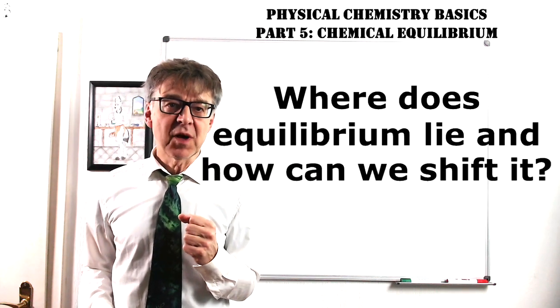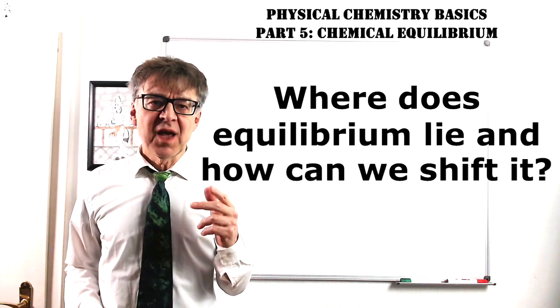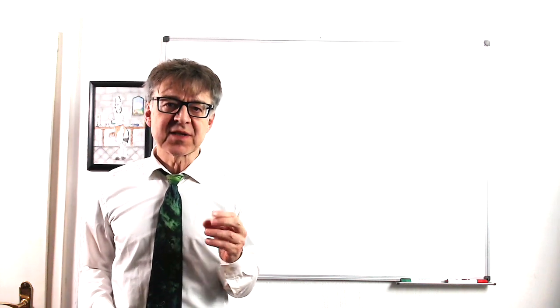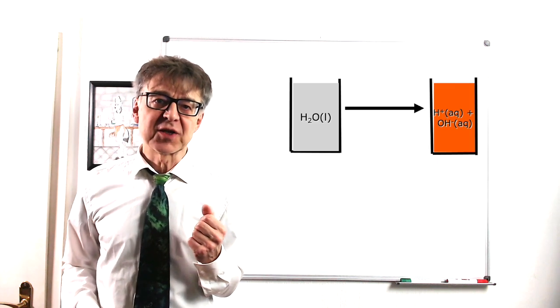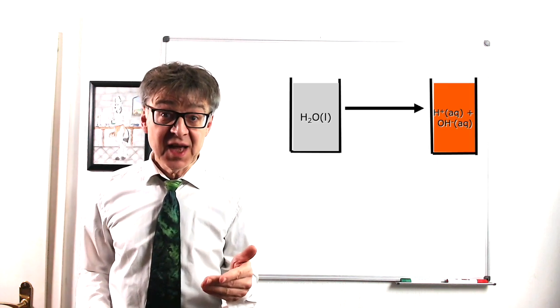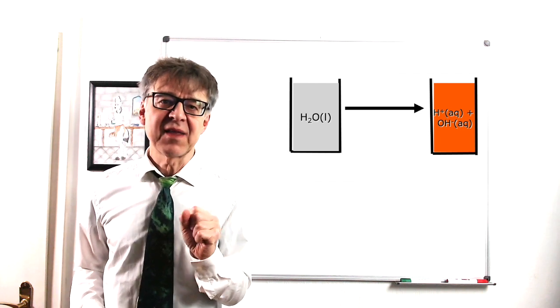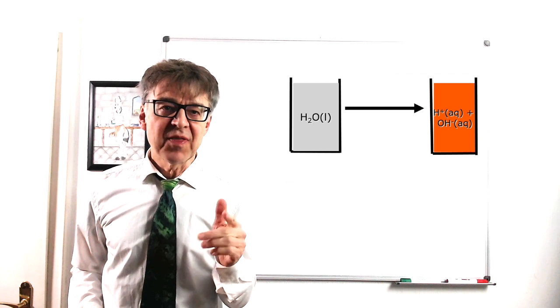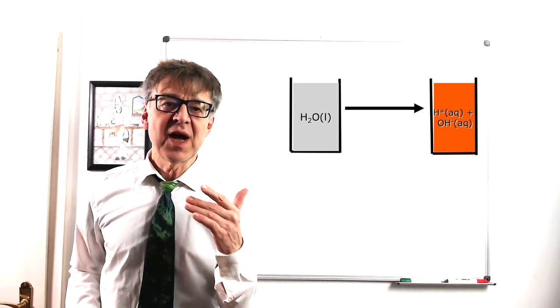What is the equilibrium of a chemical reaction and how can we shift it? In the last lecture, we discussed the autoprotolysis of water into H plus and OH minus thermodynamically and stated that this process does not have a standard affinity. That is, this process will never run, more specifically, never run to completion.